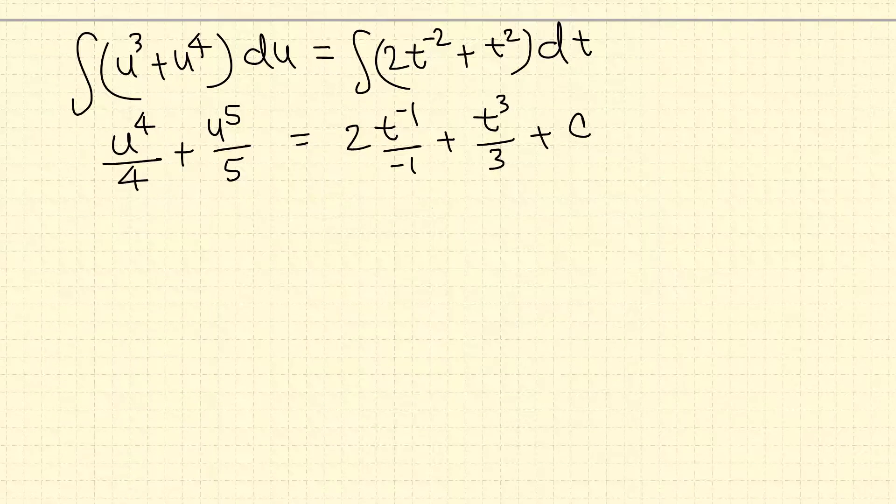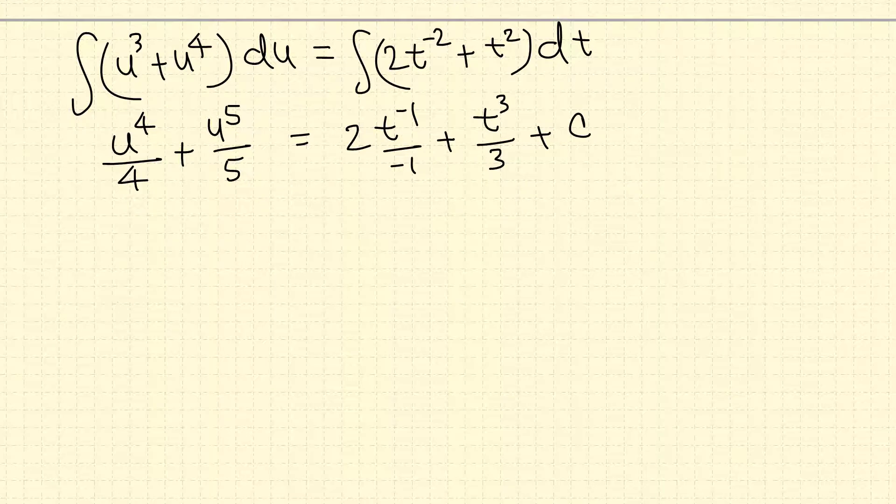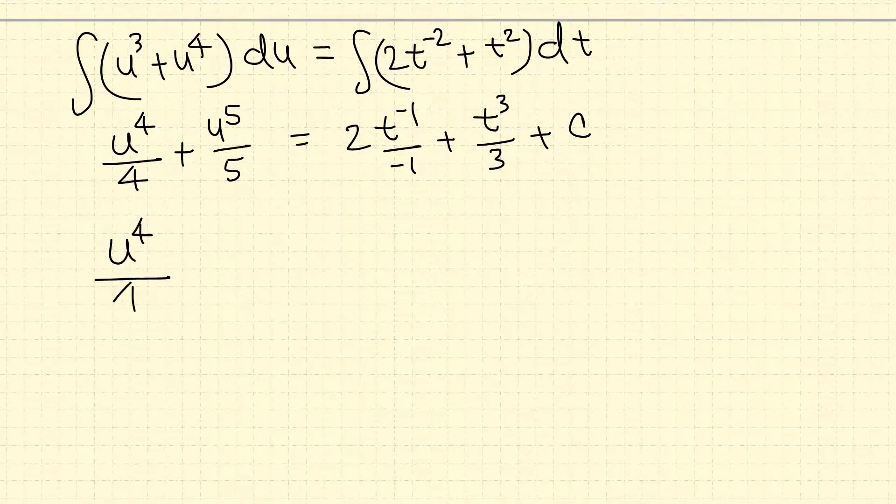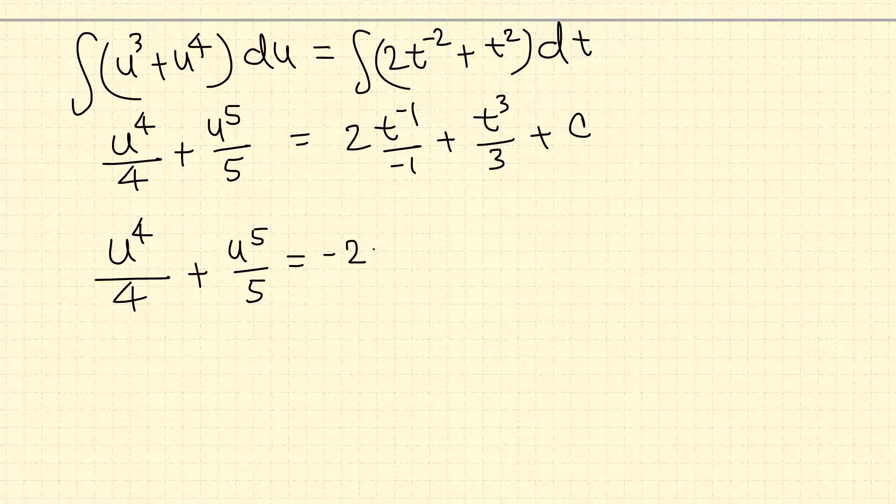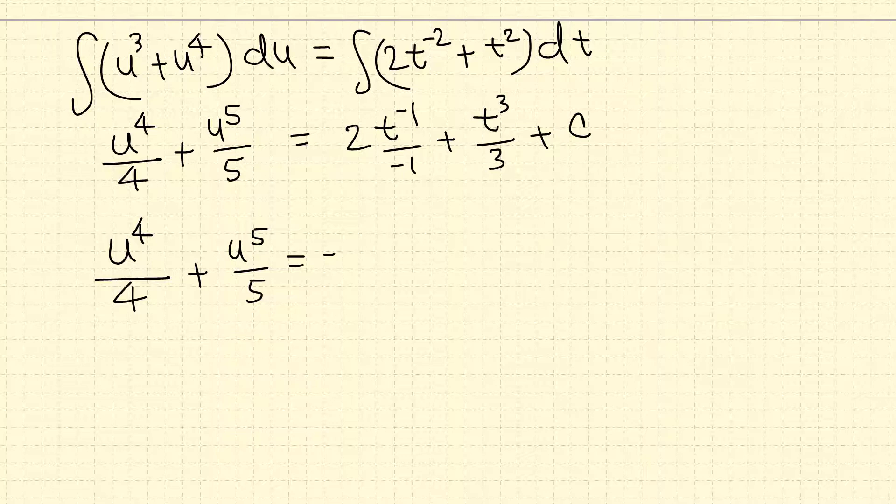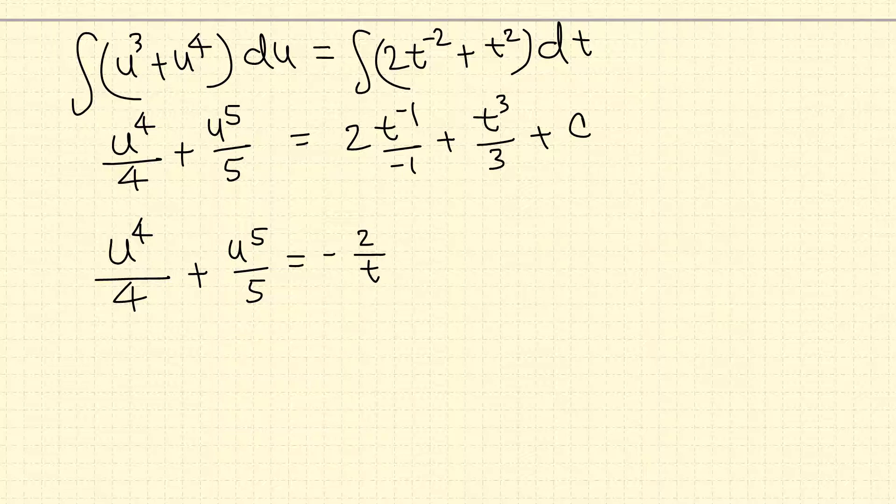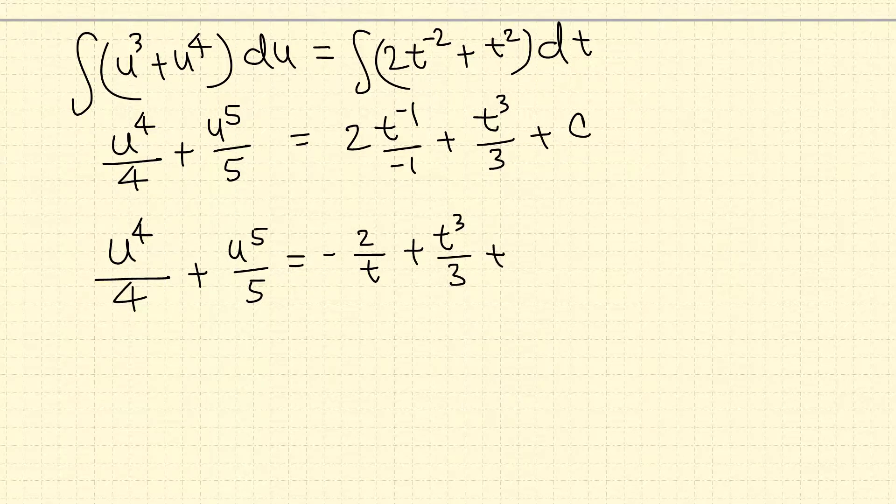Here 2t negative 2 plus 1 negative 1 over negative 1 plus t^3 over 3 plus c. We may leave here but let's not leave negative exponent. So u^4 over 4 plus u^5 over 5 equals this negative on the bottom, bring to the front. So t raised to negative 1 is just 1 over t, or we can write negative 2 over t, plus t^3 over 3 plus c.